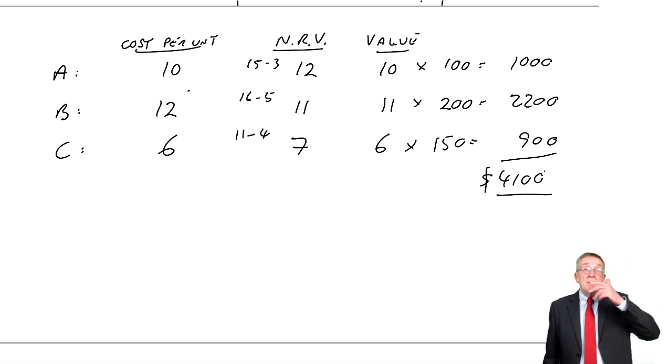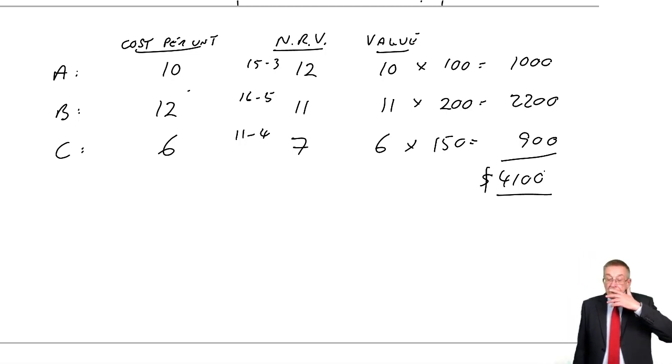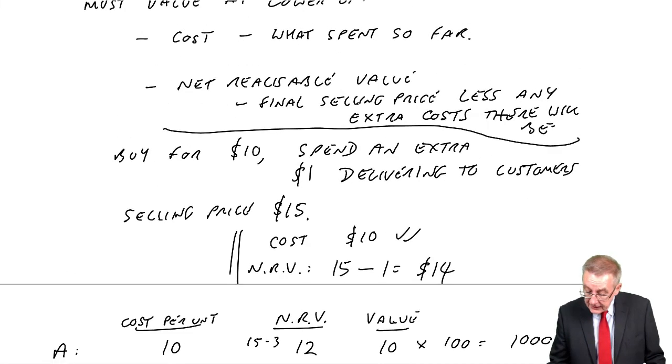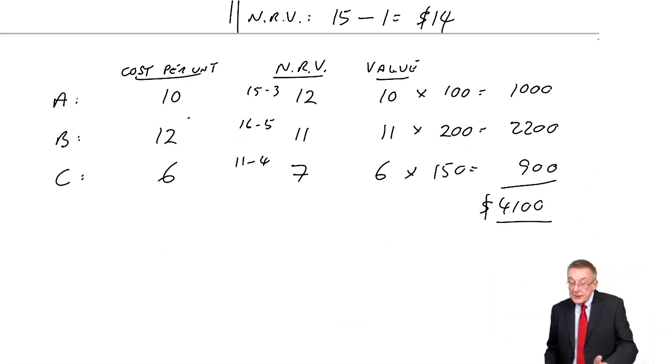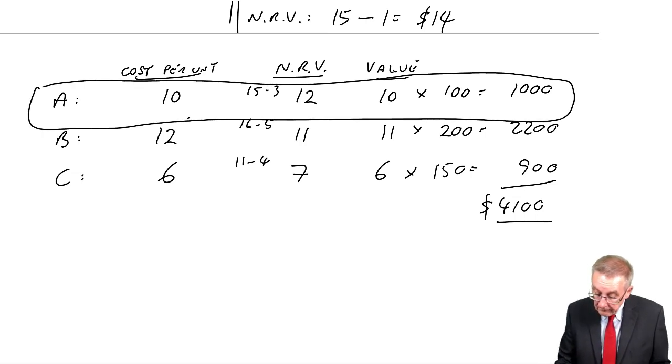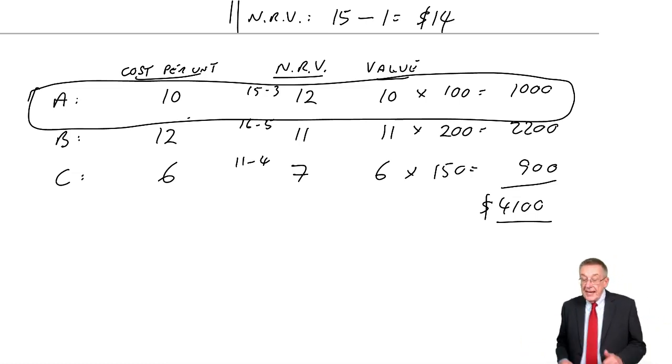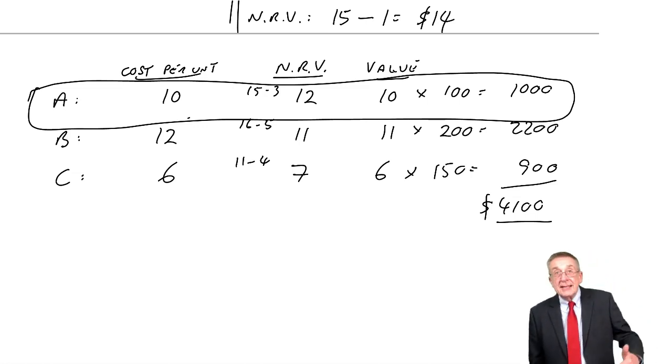So, I hope that's clear, but do remember one thing I said before: each unit is valued separately. If I had 100 units, look at A, for instance. A has 100 units. Suppose 99 of them were fine, cost $10, net realizable value $12, fine, those 99 are valued at $10. But if one of them, if the other one was damaged, and its net realizable value was only $6, that one unit would be valued at $6, even though the other 99 would be valued at $10.